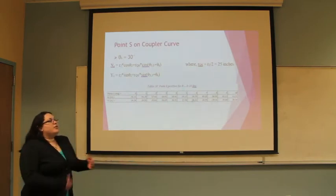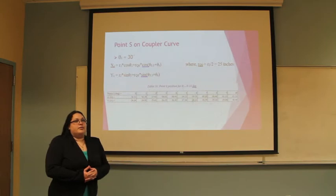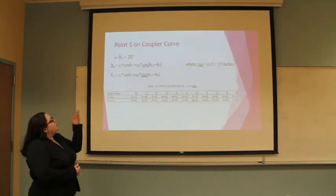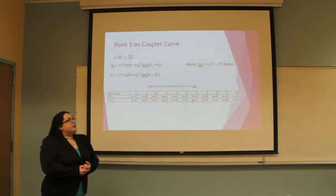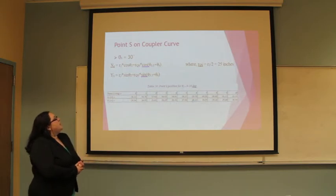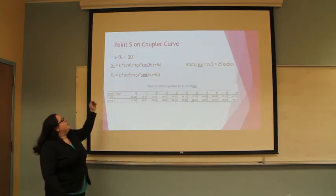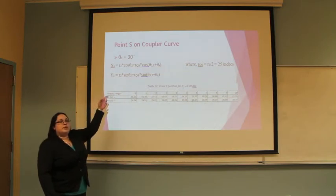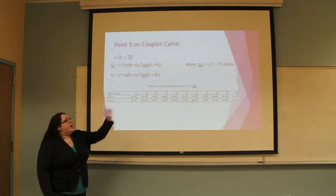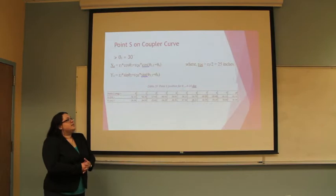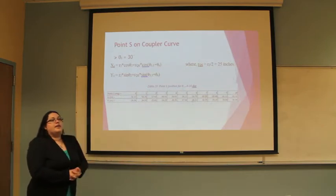Next we solved for the position of point s on the coupler curve. For this we used theta s equal to 30 degrees, and we solved for the position x and y by using the top two equations in this picture, and r q s was equal to 25 inches.